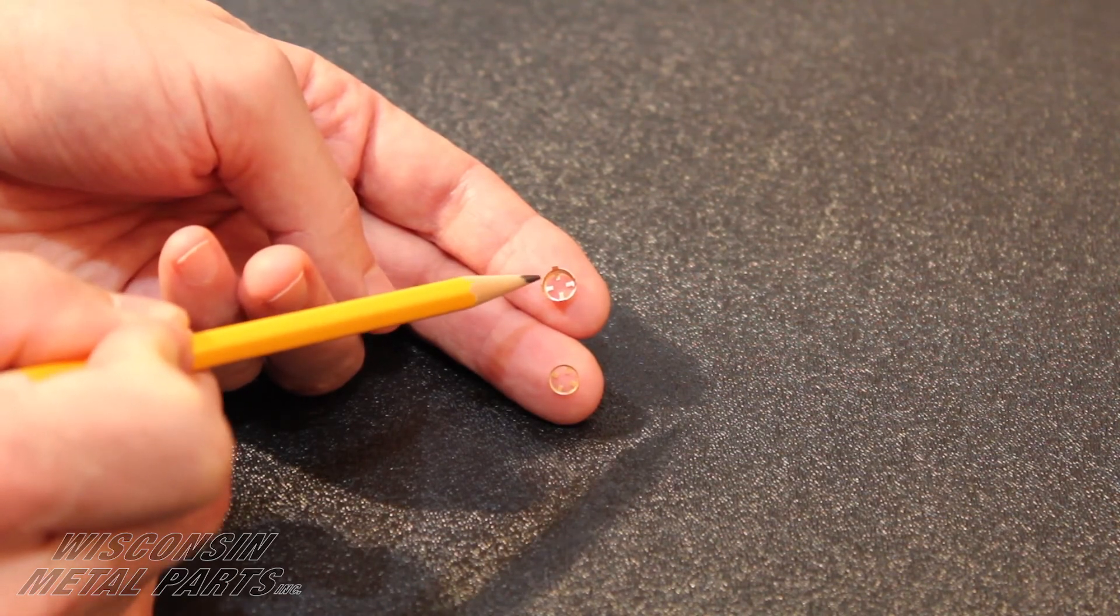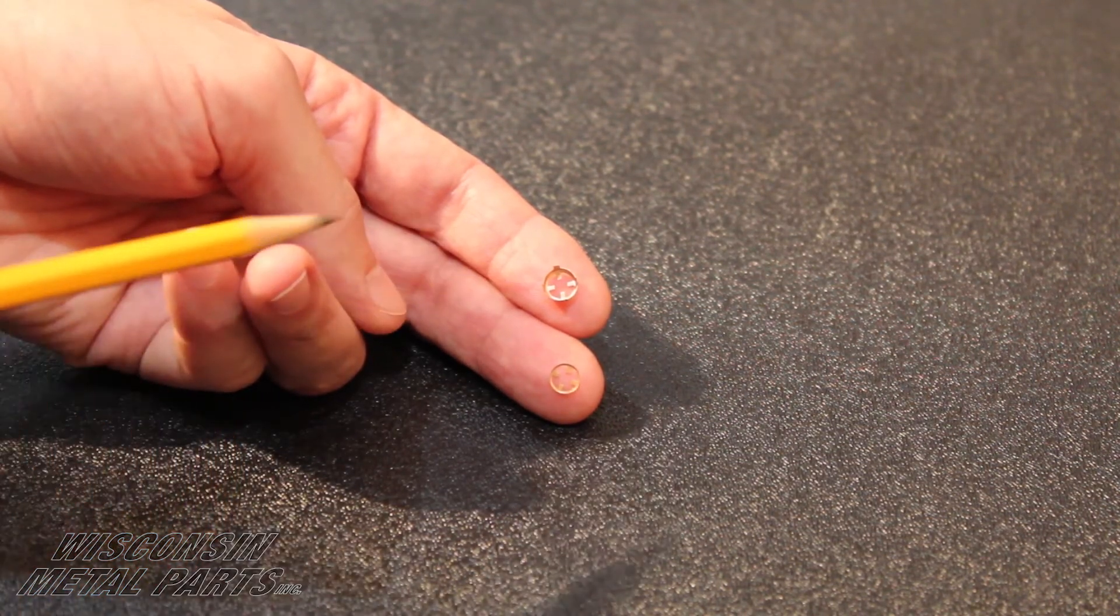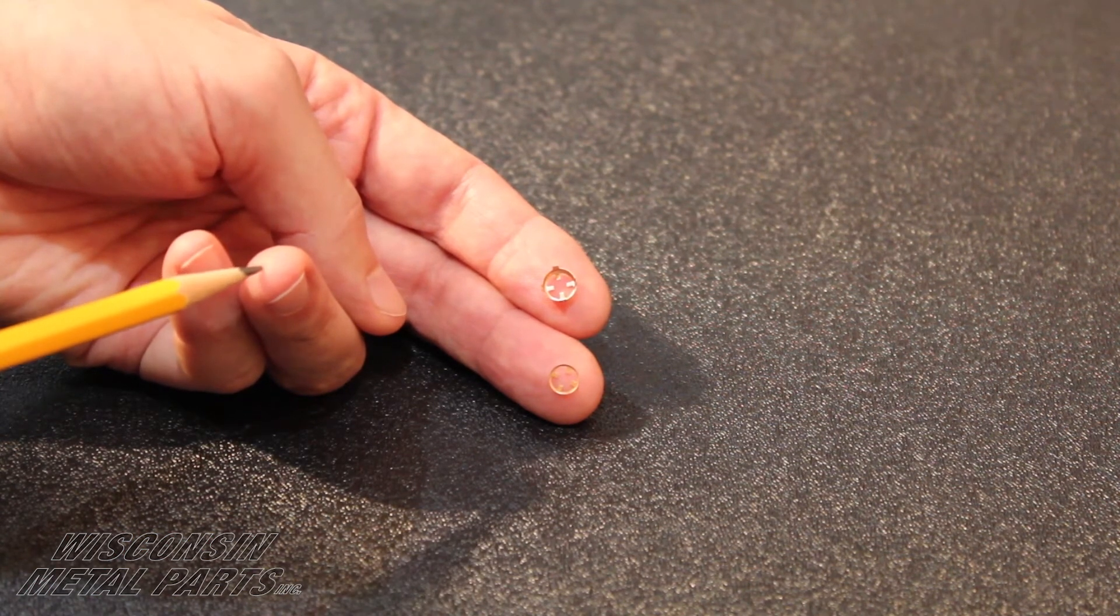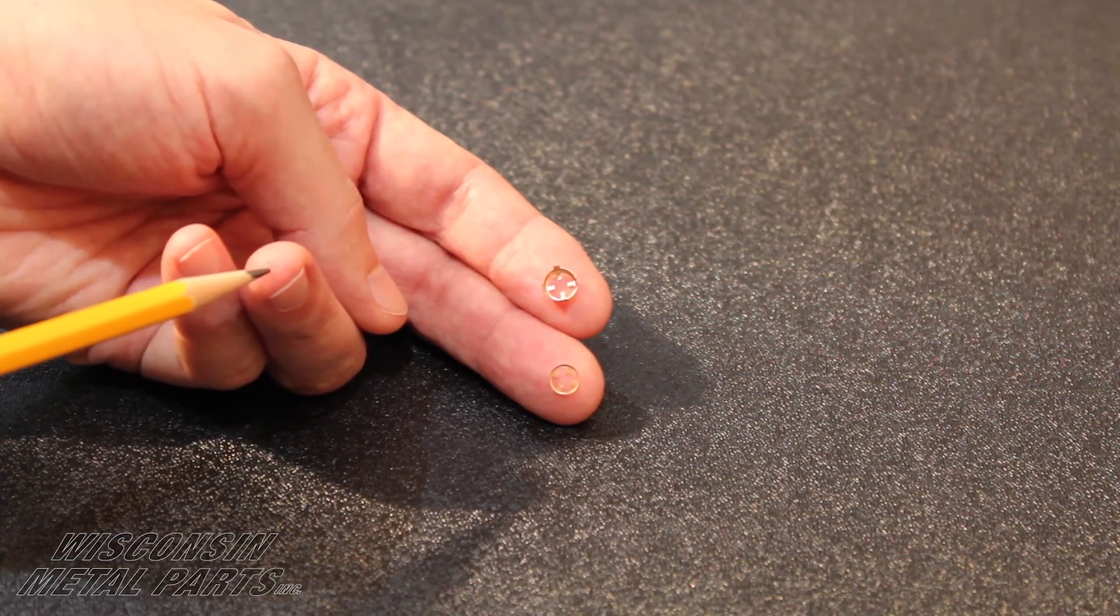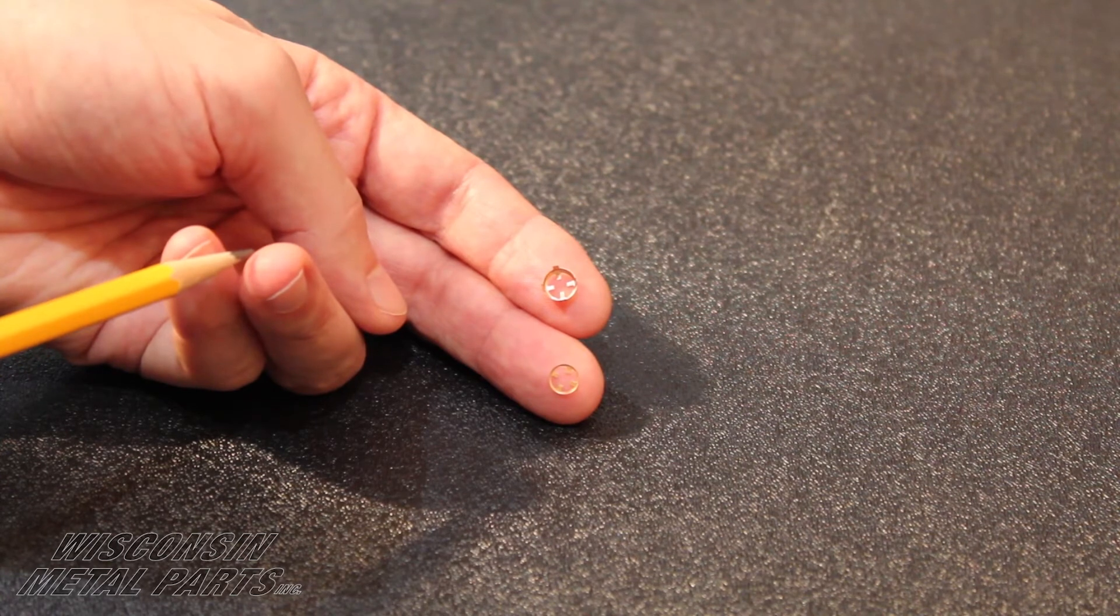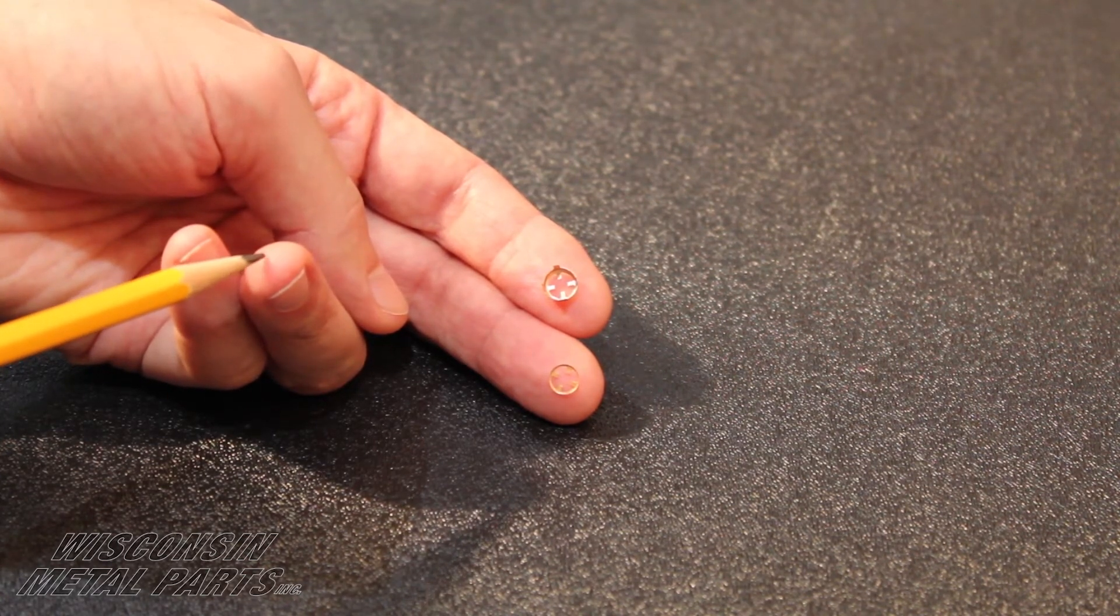We're holding tolerances of plus or minus two thousandths on these features. These particular parts we run around four million parts a year in our high-speed brooder stamping press.